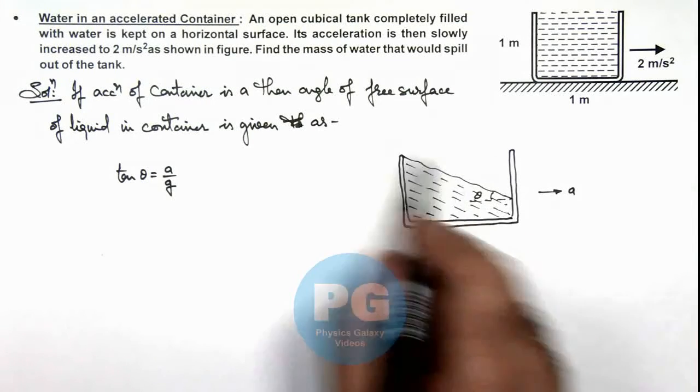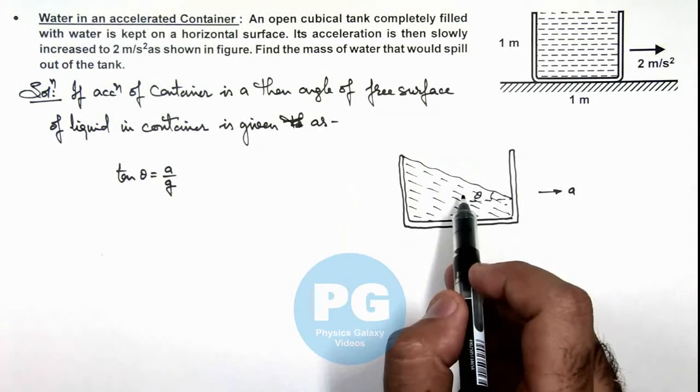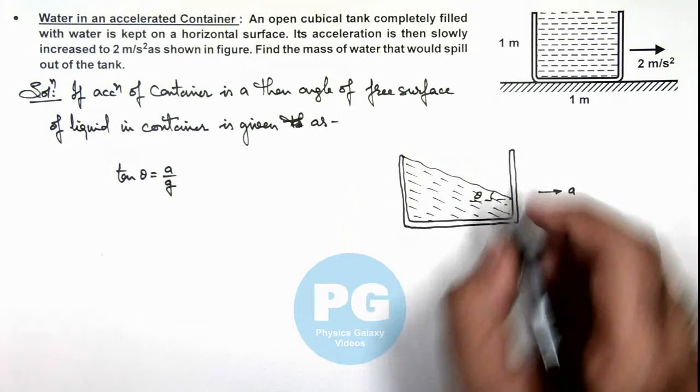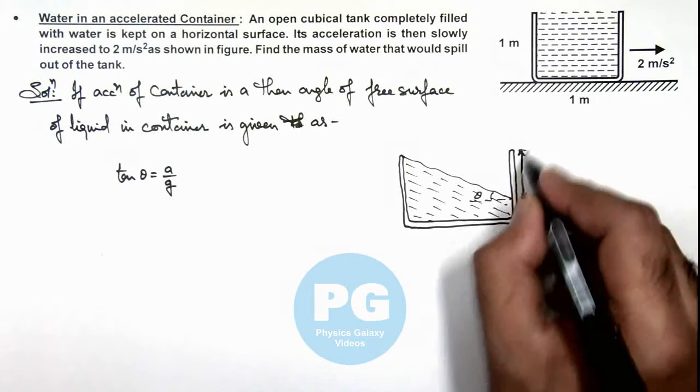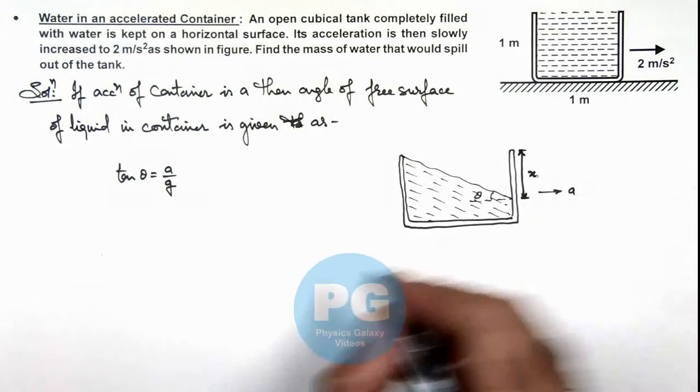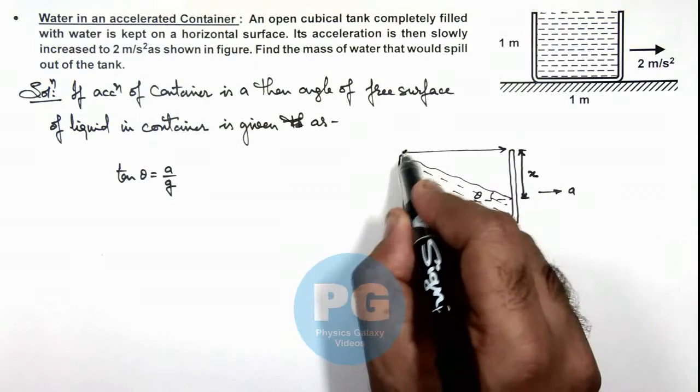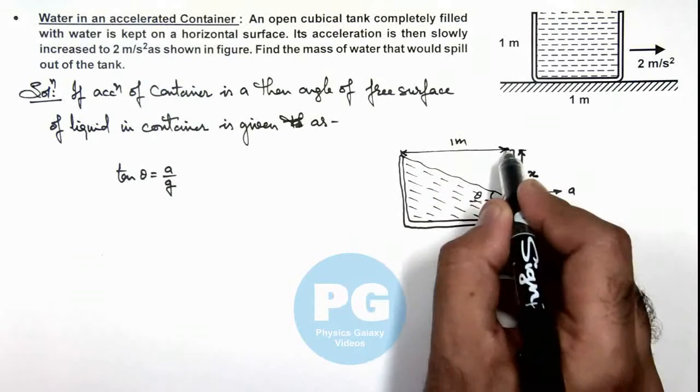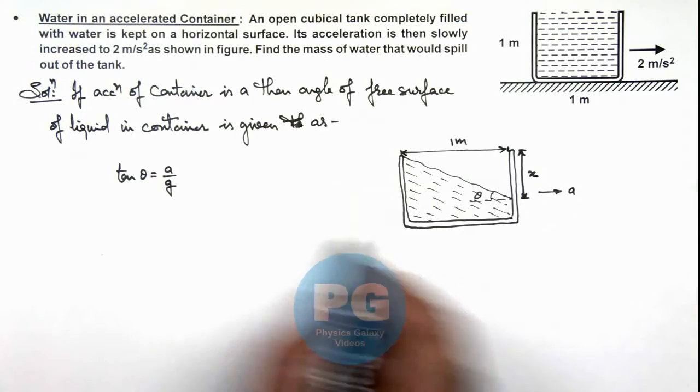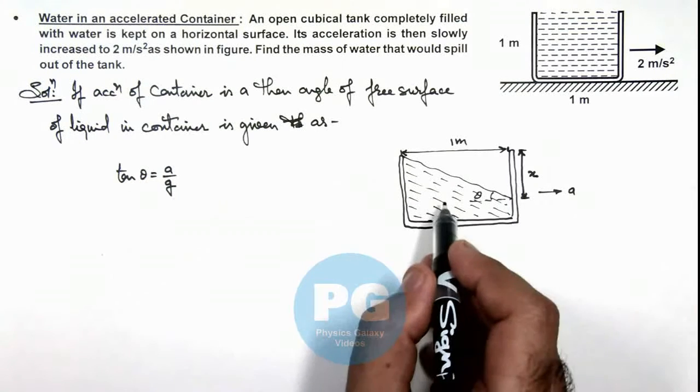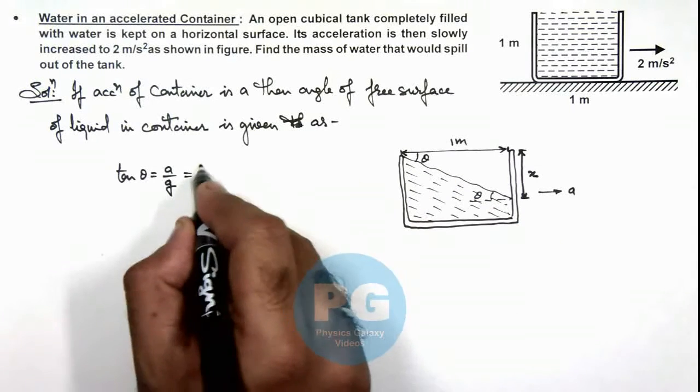The volume which will spill over is the volume in this triangular cross section. So if the depth to which the liquid level exists on the right wall is x, and the length we are provided is 1 meter, then we can directly write tan theta equals ay by g. This angle is also theta, so tan theta equals x by 1.